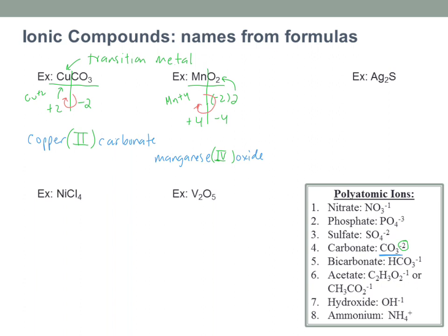Ag₂S: silver and sulfide. Silver is a transition metal, and sulfide is −2. I need a total +2 to balance, but I have two silver atoms, so the +2 charge is distributed across both — each silver must be +1. So this is silver(I) sulfide. If it were silver(II) sulfide it would just be AgS, but here it's silver(I) sulfide because each silver carries a +1 charge.